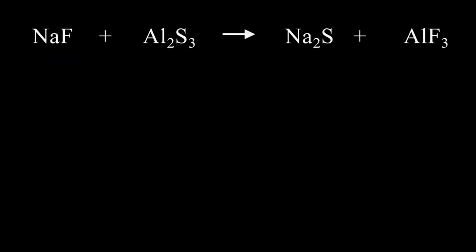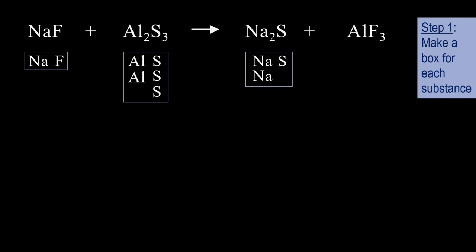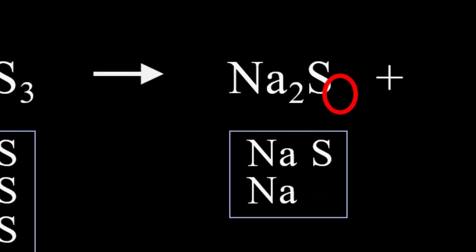This method is great for moderately difficult equations, so let's try to balance the reaction of NaF with Al2S3. Step 1, make a box for each substance. Always keep in mind that no subscript present means a subscript of 1.